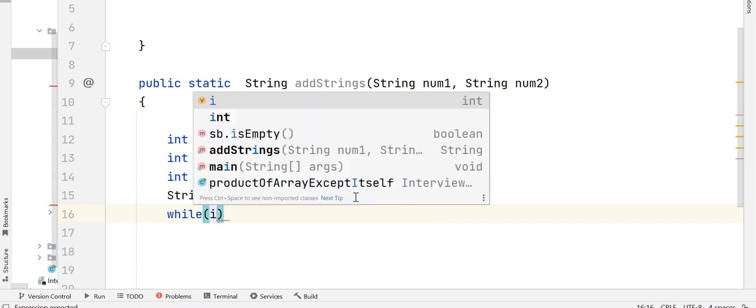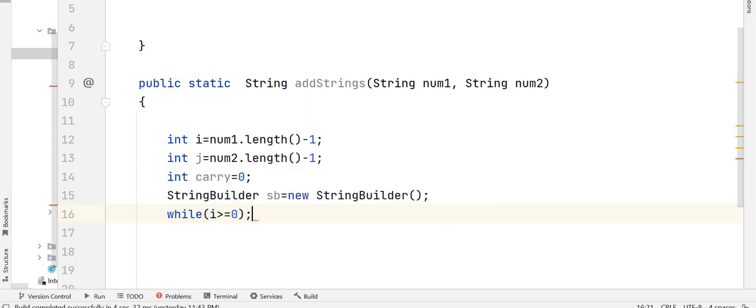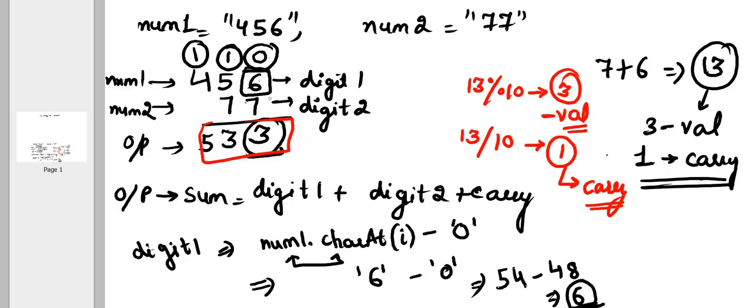So our loop would be either i should be greater than equals to 0 or j should be greater than equals to 0 or carry should not be equals to 0. So here you can see i greater than equals to 0 that means digit 1 is present or carry is not equals to 0. That means there is some carry in it.